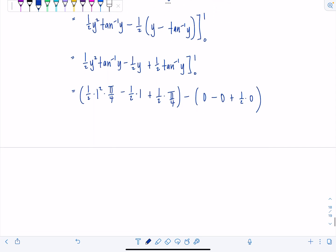And let's see. All I have left now is 1 half times pi over 4. So that's pi over 8 minus 1 half plus another pi over 8. 2 pi over 8 is pi over 4. Minus 1 half.